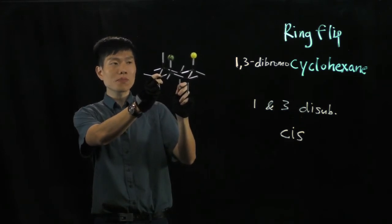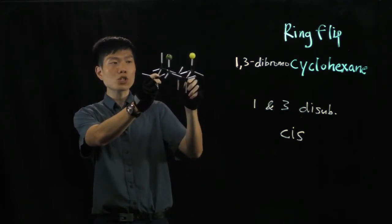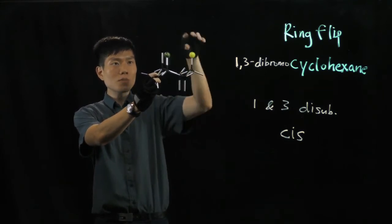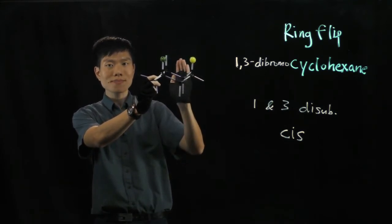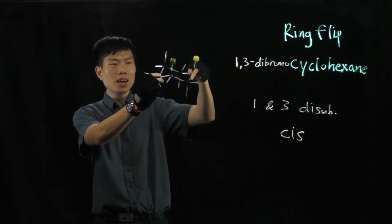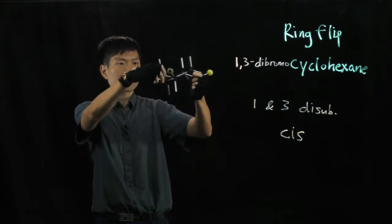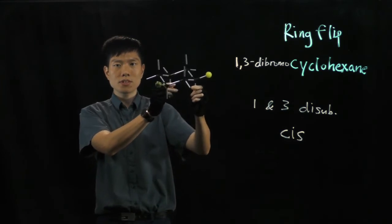So now let's do a ring flip. Ring flip is the inside-out flip, watch carefully. Right now these 2 bromines point up in the axial position and they're cis. Now I do ring flip. What happens now? You see?